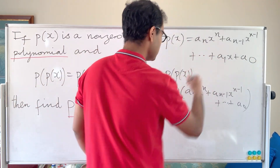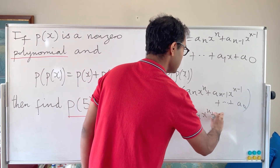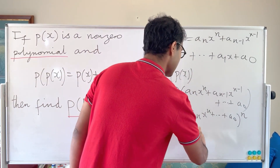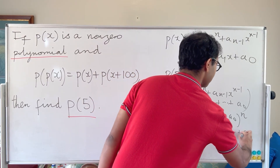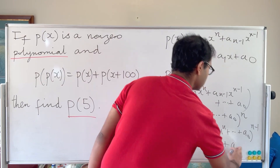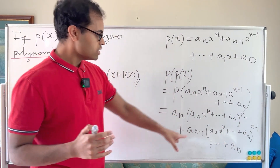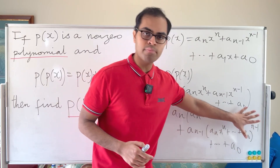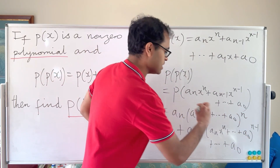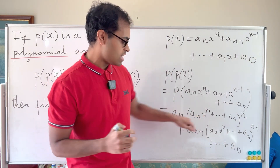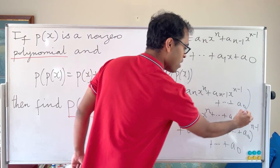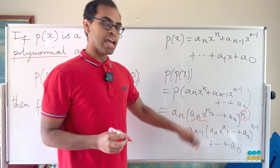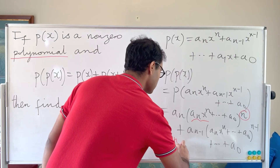Our highest degree term is a_n times (a_n x^n + ... + a_0)^n. So expanding out p(p(x)), the highest degree term comes from taking (a_n x^n)^n, which is just x^(n²). The other terms — powering by n−1 or lower — produce degrees less than n². So if p has degree n, then p(p(x)) has degree n².